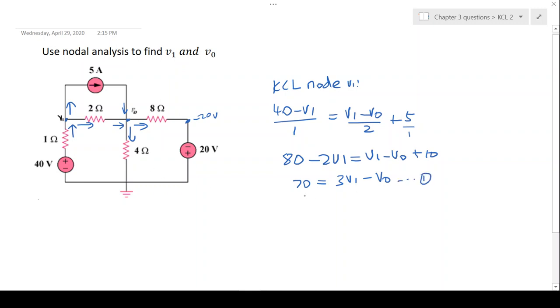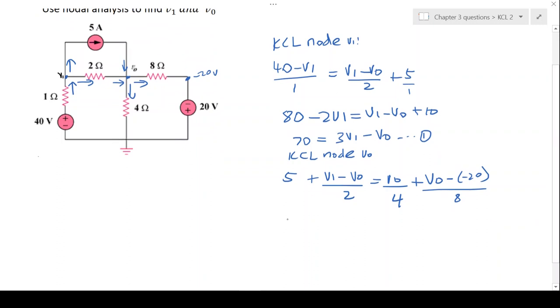Our second equation will come from KCL node v0, where we will be doing the KCL in that node. So the currents going in will be 5 amps plus v1 minus v0 over 2, which gives us the currents going out v0 over 4 plus v0 minus the voltage there, which will be minus 20 divided by 8. Therefore 5 over 1 plus v1 minus v0 over 2 is going to give us v0 over 4 plus v0 plus 20 all divided by 8.